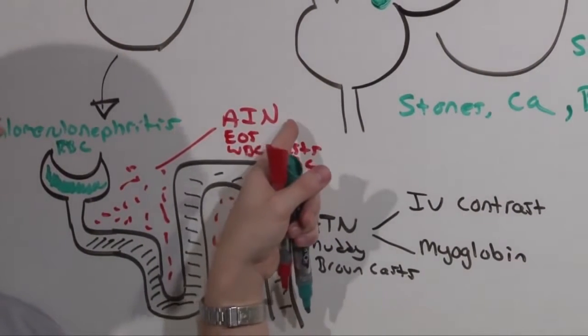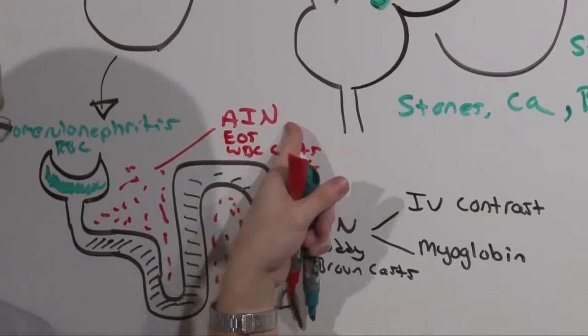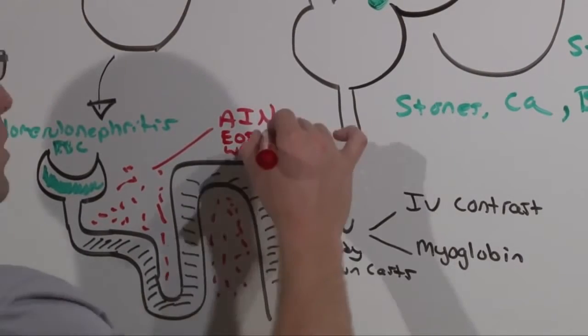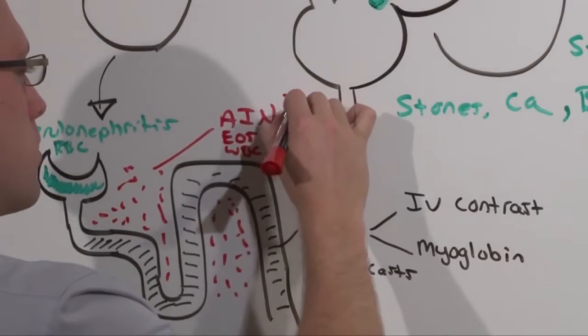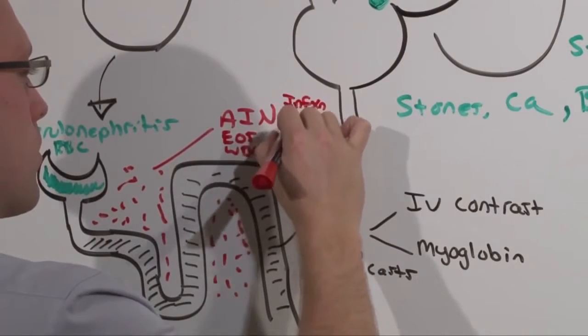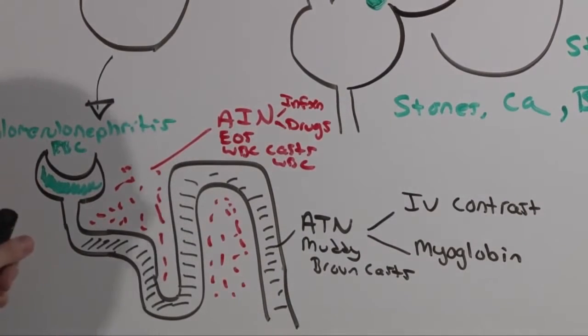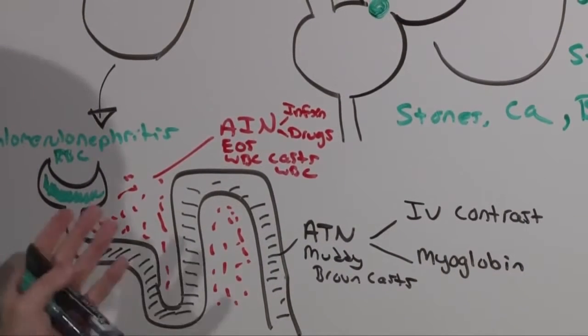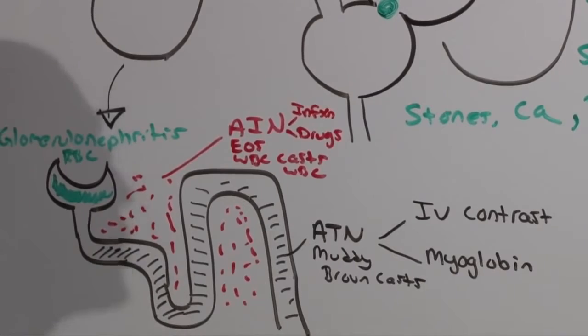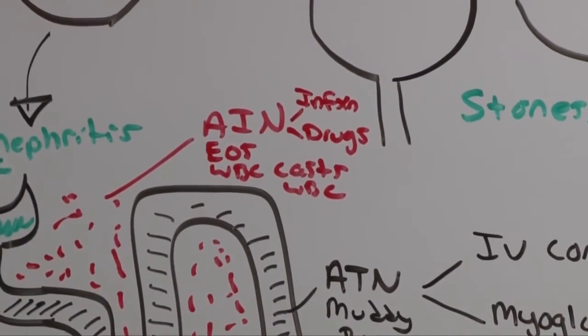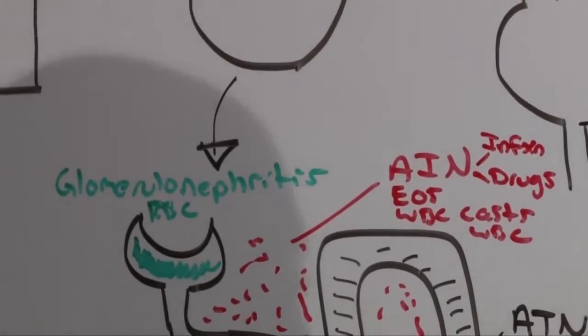In acute interstitial nephritis it is an itis. It is an inflammation and is generally going to be caused by infections or drug reactions. And glomerulonephritis has its own lecture because there's so many. You're generally going to diagnose them by a biopsy and you only go to biopsy if it's absolutely necessary as we'll talk about.